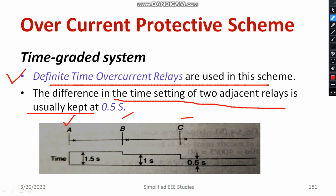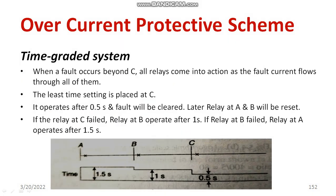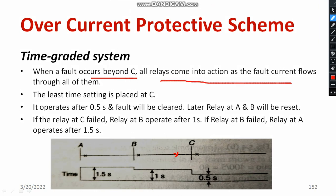This is the basic scheme. Suppose relay C fails — relay B and A will operate. If relay B and C both fail, then relay A is going to operate. Suppose a fault occurs beyond C: all relays take action because fault current flows through each relay, so definitely three relays are going to operate. The least time setting applies for relay C, and the highest time setting is for relay A which is nearby the source. It operates after 0.5 seconds, the fault is cleared, and later relay A and B will reset.